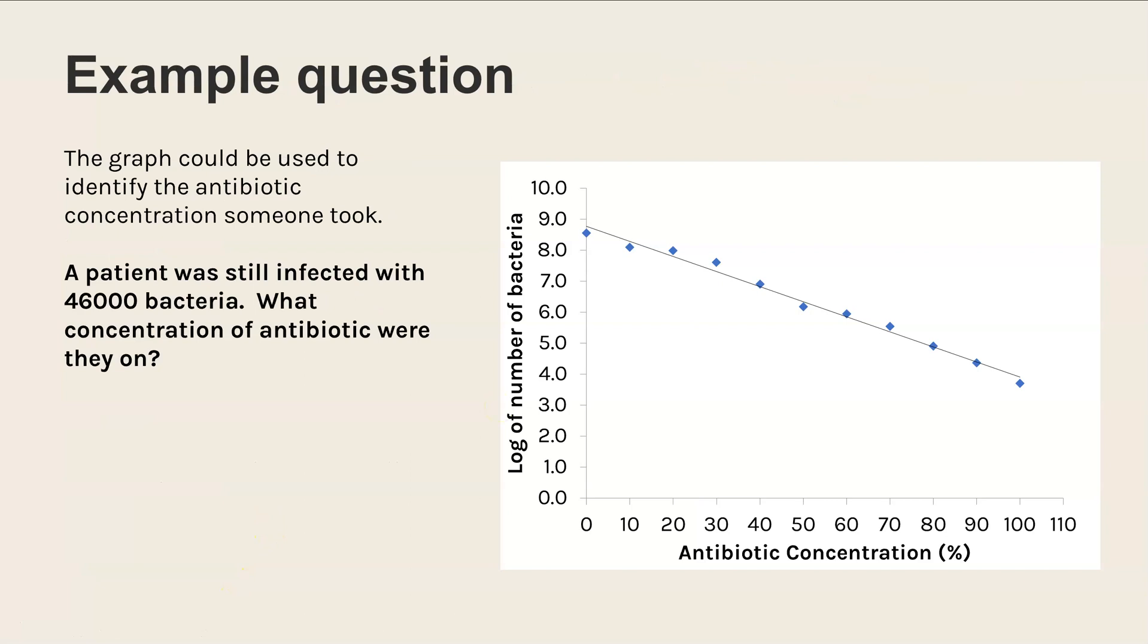Okay, so here's another example. This time we're told that a patient was infected with 46,000 bacteria and they want you to say what concentration of antibiotic they must have been taking. This time we've been given the original value for the number of bacteria, so we can't read off straight from the graph to work out the antibiotic concentration.